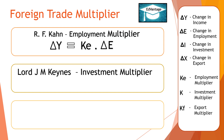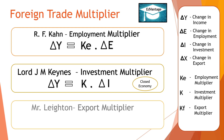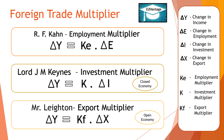Lord J.M. Keynes, following this theory, gave the concept of Investment Multiplier, which is used in the case of Closed Economy. Further, Mr. Harrod gave the concept of Export Multiplier, which is used in the case of Open Economy.